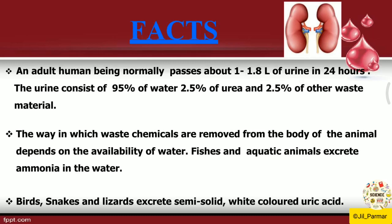Now some facts — these are not from your syllabus but for those interested in general knowledge. An adult human being normally produces about 1 to 1.8 liters of urine in 24 hours. The urine consists of 95% water, 2.5% urea, and 2.5% of other waste materials. So in a full day, about 1 to 2 liters of urine is produced, containing 95% water, 2.5% urea, and 2.5% other waste products.